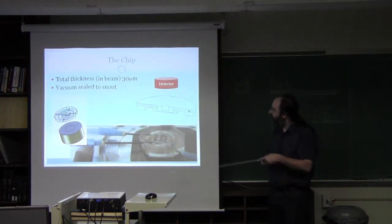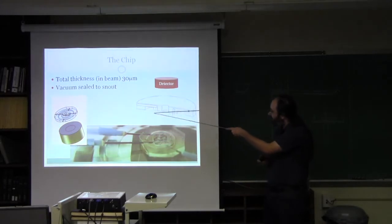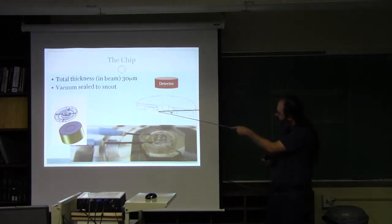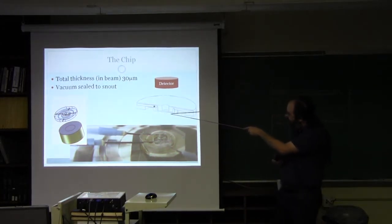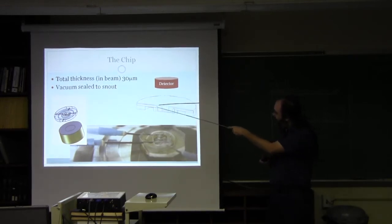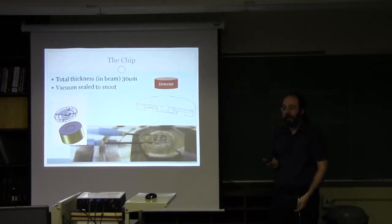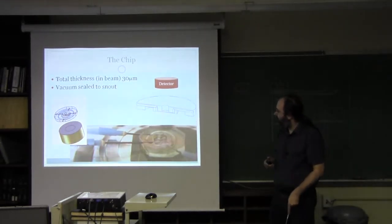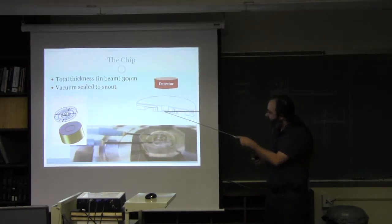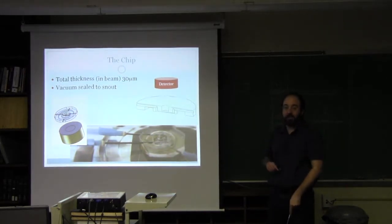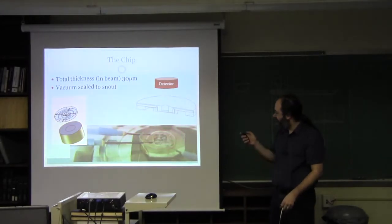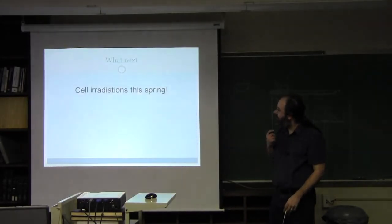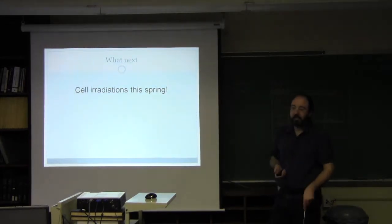This is the microfluidic chip that we're using. It has a channel going across, coming down. The microbeam exit window would serve as the bottom surface of this channel. You have here a bigger channel where we apply a weak vacuum to bond this chip to the exit window. This way, we're guaranteeing that the cells are very close to the exit window and there's no scattering or no significant scattering which will degrade our targeting accuracy. We're about ready to start cell irradiations sometime this spring.